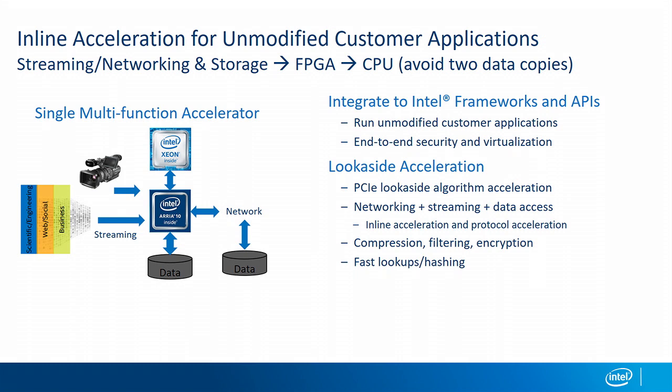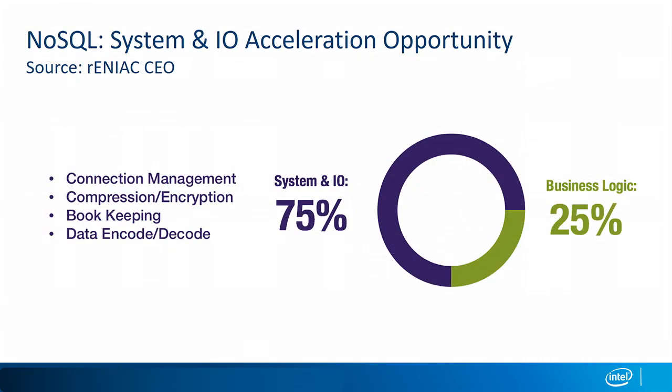You might wonder, for my data analytics, how much time am I really spending doing these types of functions? I have a quote here from one of our partners, Reniac. For Cassandra, this partner observes that 75% of your CPU cycles are doing system and I/O functions — think about three out of four CPU cycles processing data access, processing network traffic, copying data. The opportunity here is to have the FPGA do this inline.